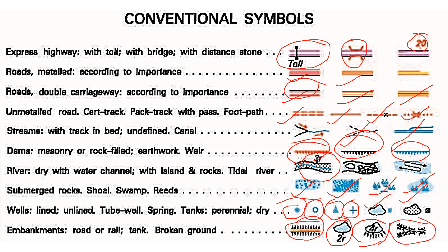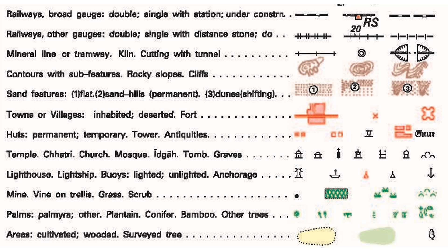Broken ground happens where we have alternate wet and dry seasons. For the railway: RS means railway station, and these are different gauges. This is with a milestone — the same thing you will find on the side of the road, but this is for road while this one is for railway.